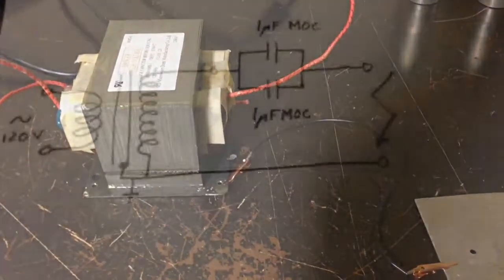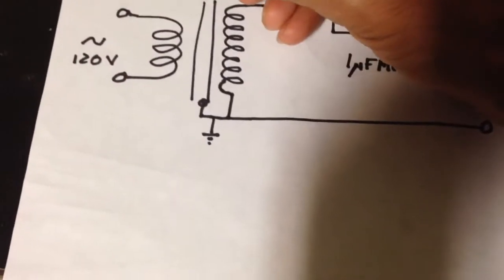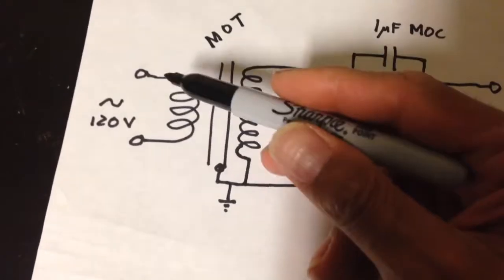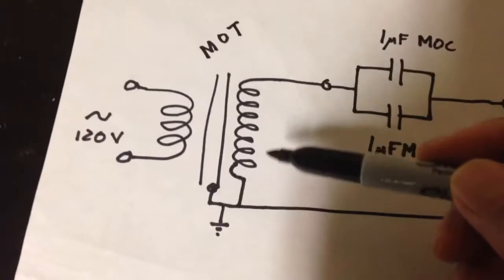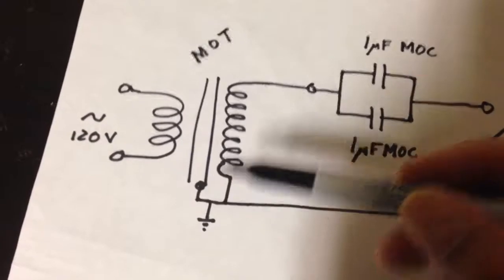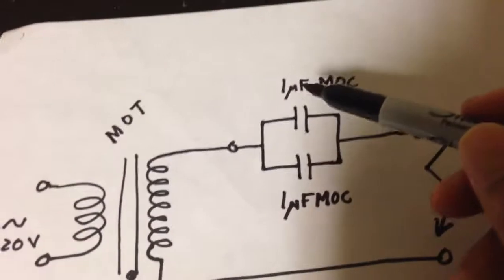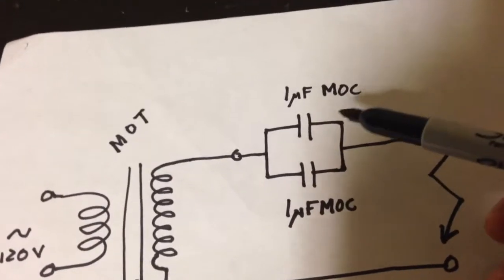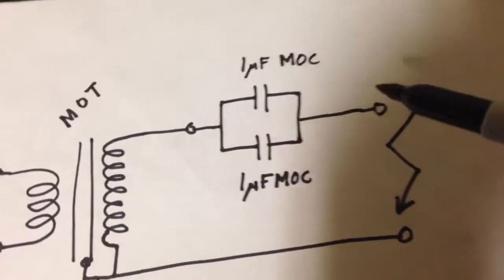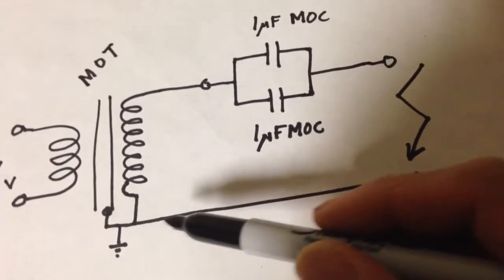So I'll just show you what the circuit looks like. So here's your microwave oven transformer. There's your primary, which is the thick wire. Here's your secondary, which is the thin wire. The secondary is connected to the metal core of the transformer. One end of it is. The other end is free. And that's connected to two 1uF microwave oven capacitors connected together in parallel. And that's one of your outputs. The other one is connected to the core of the transformer.